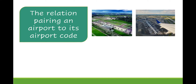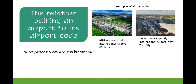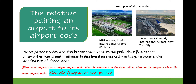Another example: the relation pairing an airport to its airport code. For instance, MNL is the airport code for Ninoy Aquino International Airport here in the Philippines, and JFK is the airport code for John F. Kennedy International Airport in New York City. Airport codes are letter codes used to uniquely identify airports around the world, prominently displayed on check-in bags to denote the destination. Since each airport has a unique airport code, the relation is a function, and since no two airports share the same airport code, the function is one-to-one.